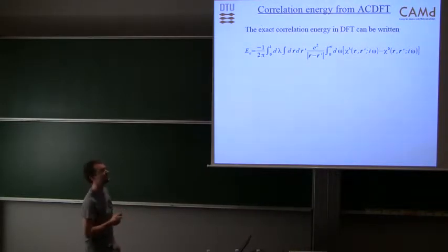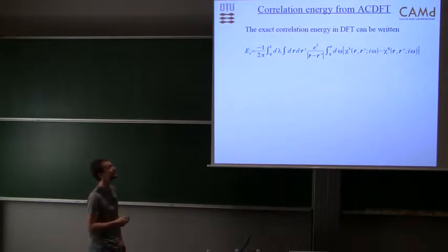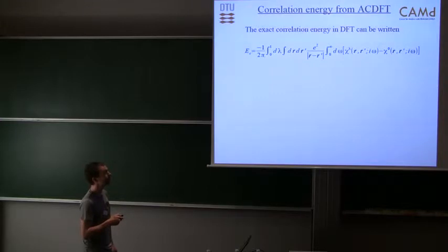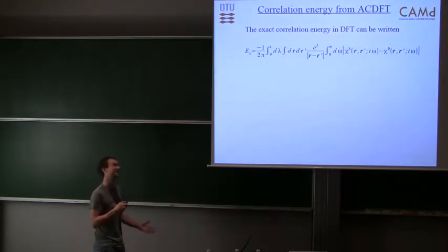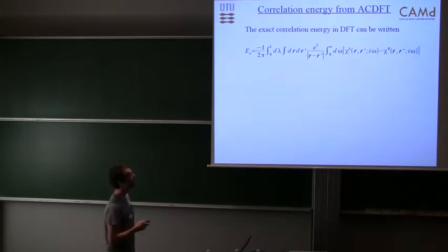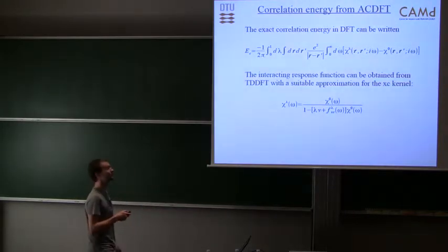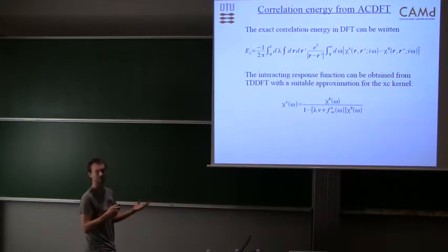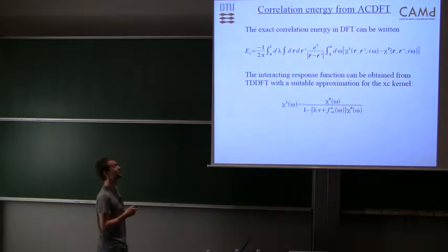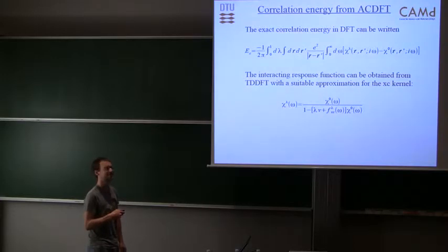With the adiabatic connection fluctuation dissipation theorem we can express the correlation energy in terms of the interacting response function and the non-interacting response function. This expression is exact if χ is the exact response function and χ_λ is the exact response function for a system where the Coulomb interaction has been scaled by λ. We can use TDDFT to express it in terms of the non-interacting response function and an exchange correlation kernel, which is the functional derivative of the time-dependent exchange correlation potential.